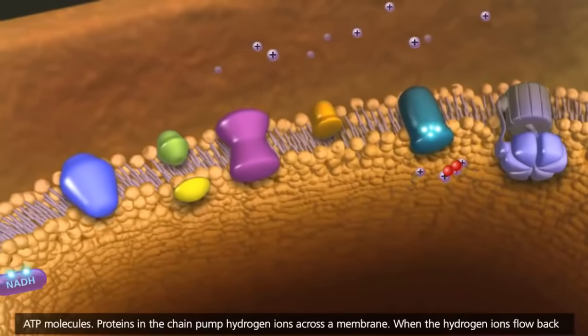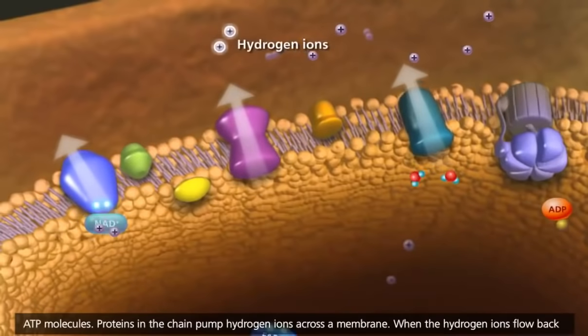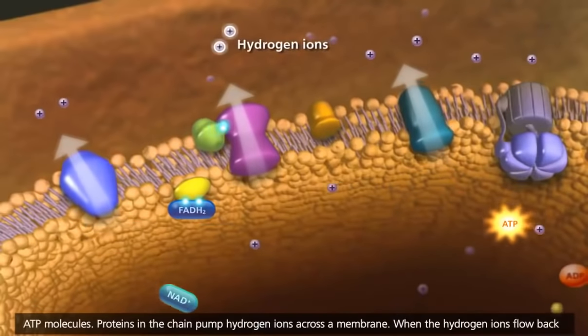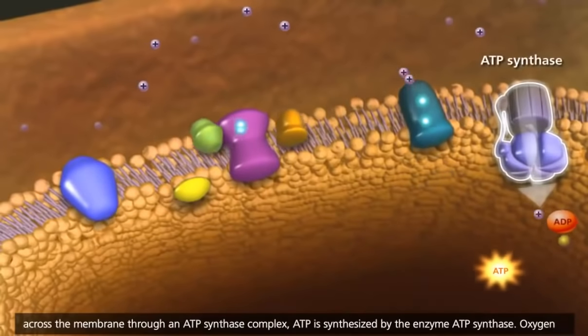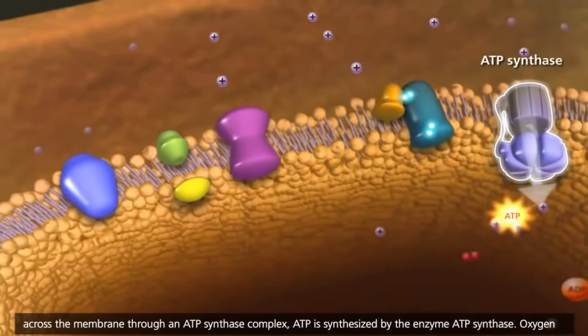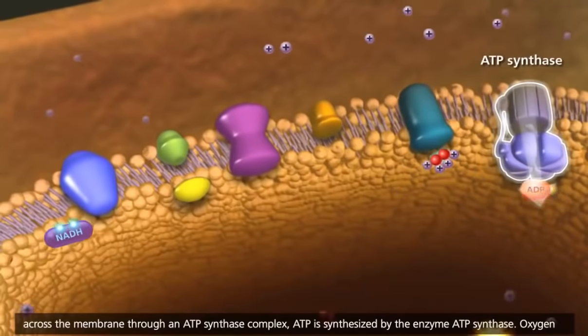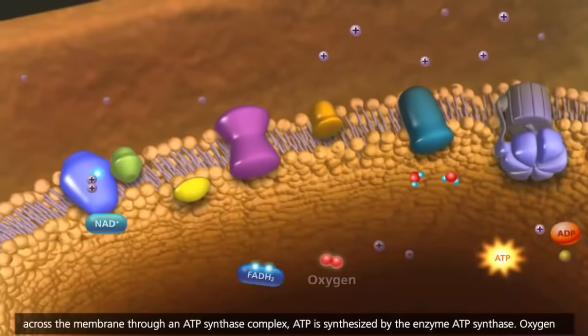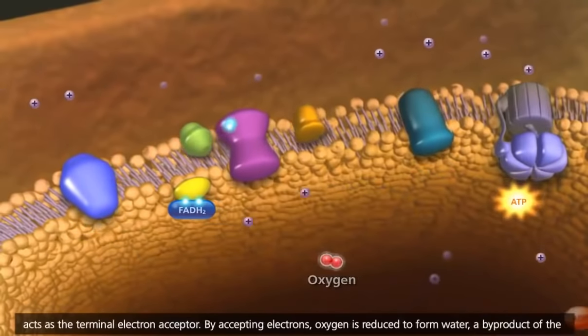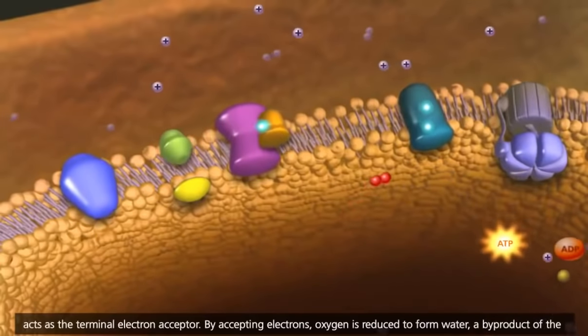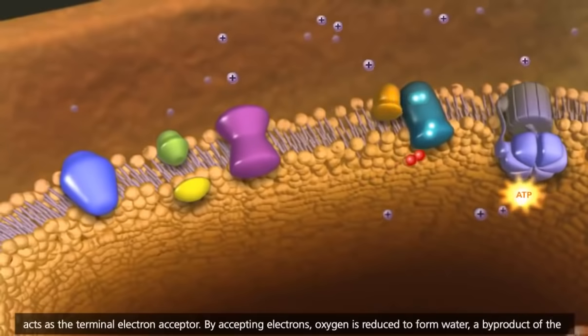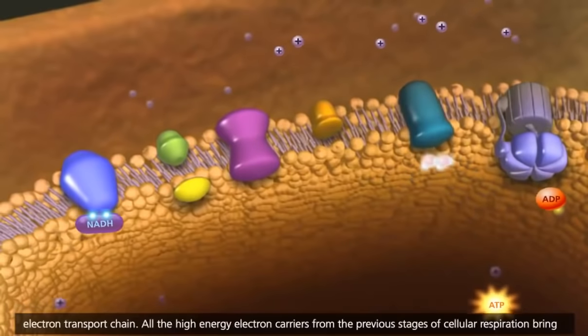Proteins in the chain pump hydrogen ions across a membrane. When the hydrogen ions flow back across the membrane through an ATP synthase complex, ATP is synthesized by the enzyme ATP synthase. Oxygen acts as the terminal electron acceptor. By accepting electrons, oxygen is reduced to form water, a byproduct of the electron transport chain.